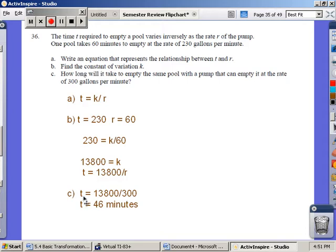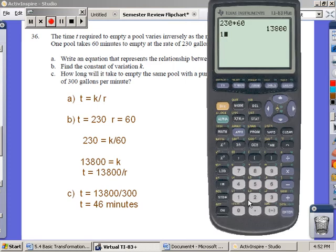So we are going to place T equals 13,800. But what is different in this problem? This pump empties 300 gallons per minute. So at a rate of 300 goes in for R. Since there's 300 gallons per minute, that's rate, so I'm going to put 300 in for R. Then I'm going to go to my calculator and do 13,800 divided by 300, and I arrive at 46 minutes.